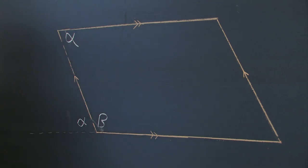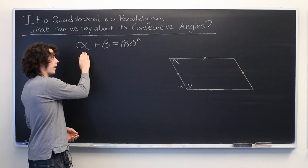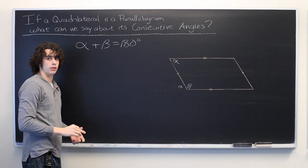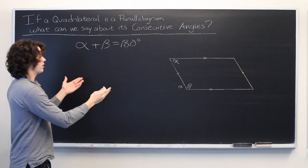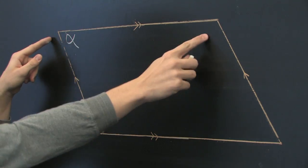So we have alpha here and beta here. But we just showed earlier that alpha plus beta equals 180 degrees. And this logic can be used on any pair of adjacent angles in the parallelogram.